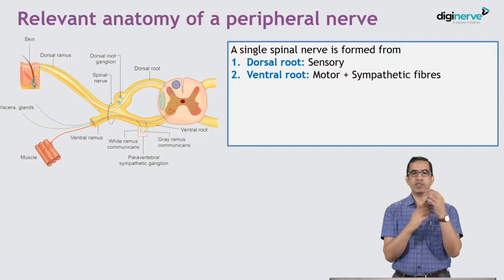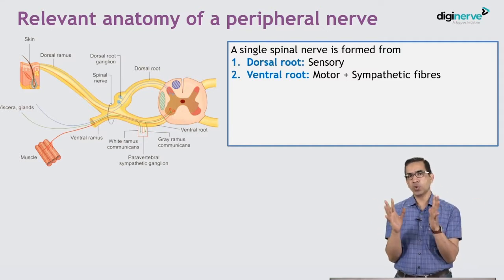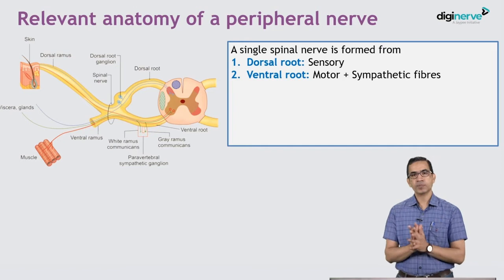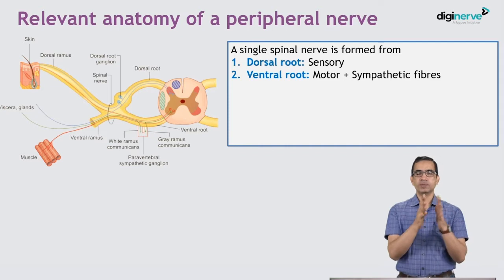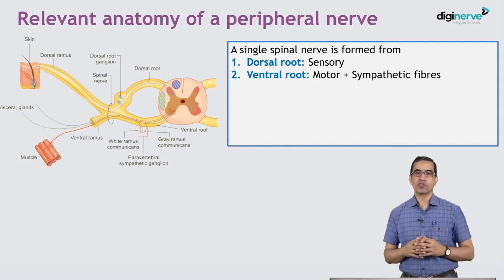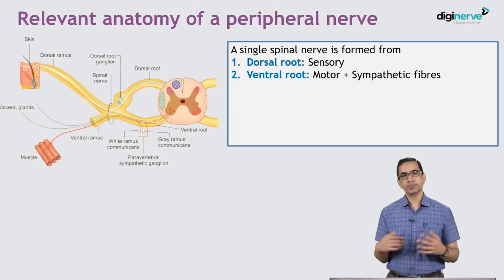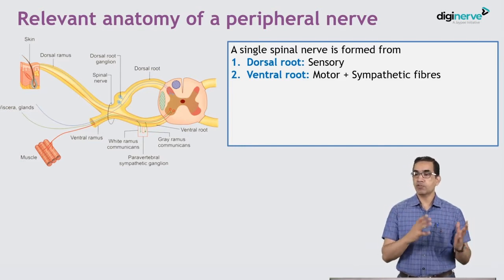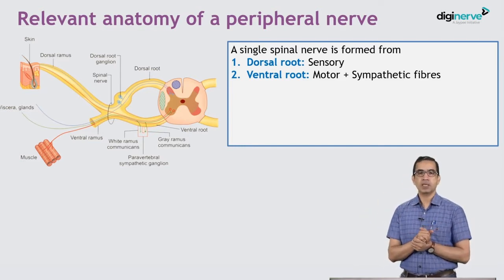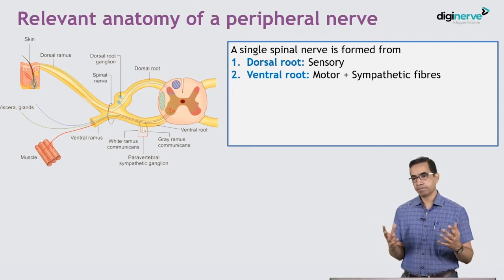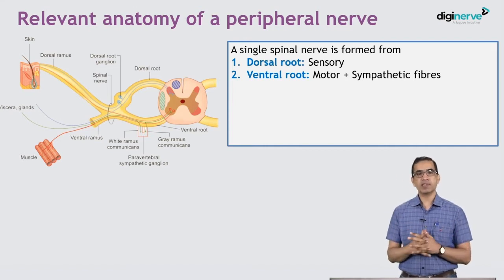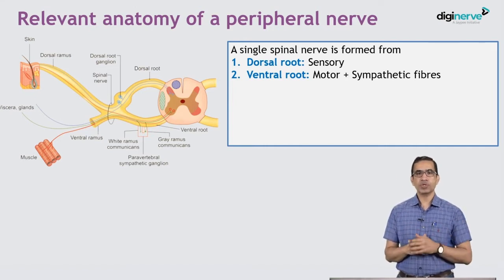Before I move on to the nerve injuries proper, let me give you an overview of what we are going to discuss. We will discuss the brief anatomy of a peripheral nerve, then how a peripheral nerve is injured, what is the response after the injury — which we call Wallerian degeneration followed by regeneration. There are some classifications associated with peripheral nerve injuries, like the Seddon classification and the Sunderland classification. Among the two, you need to remember the Seddon classification — it is easy and more practical.